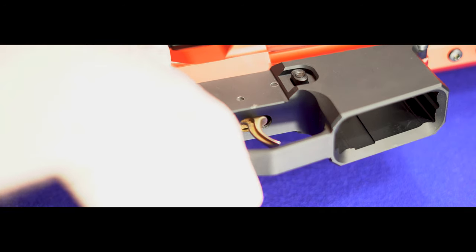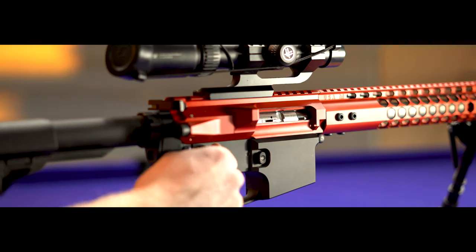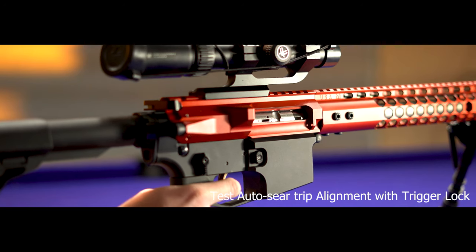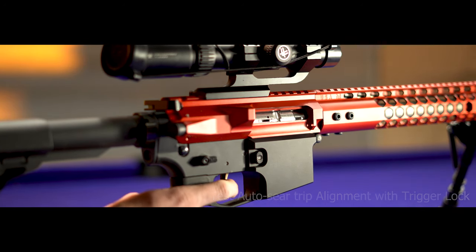Now you're ready to function check your firearm. Ensure there is no ammunition in the chamber before function checking the firearm. Move the safety selector to the safe position and the trigger won't be able to be pulled. Move the safety selector to the semi position and the trigger can be pulled. The trigger should pull all the way in the echo position as well.